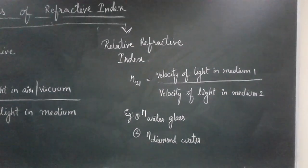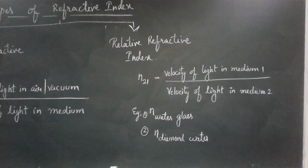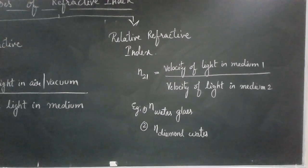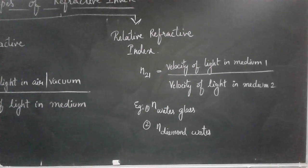The other type is relative refractive index. In this, the velocity of light is traveling in medium 1 and medium 2. Neither medium 1 nor medium 2 will be air or vacuum - it can be any two other media.